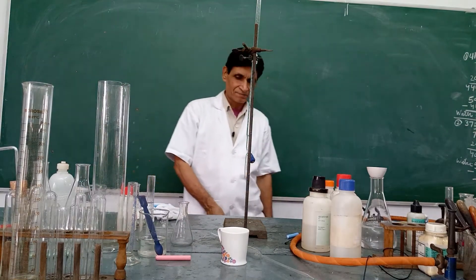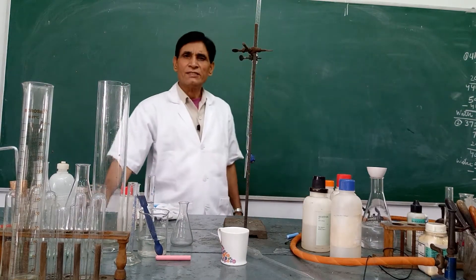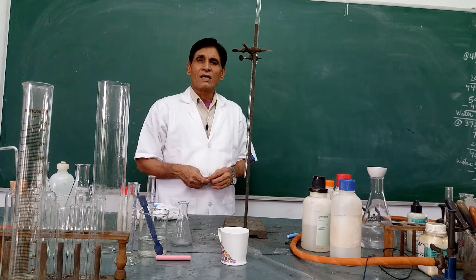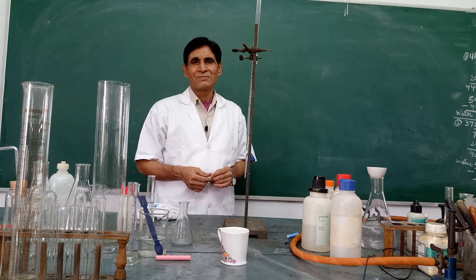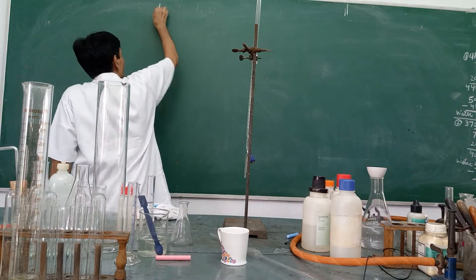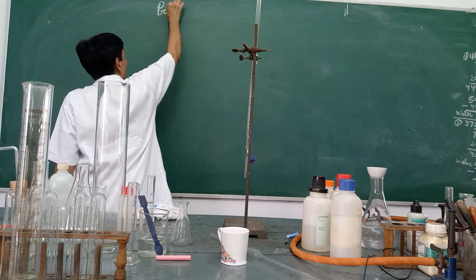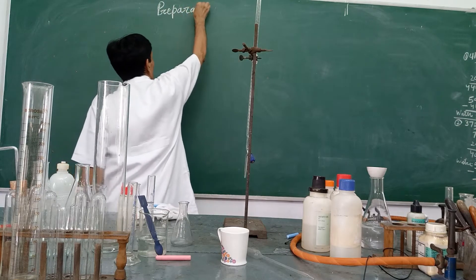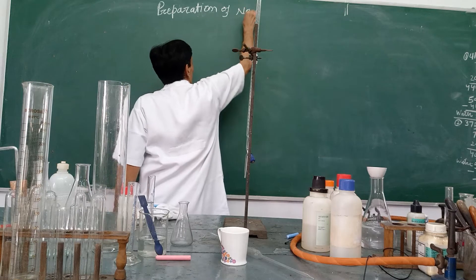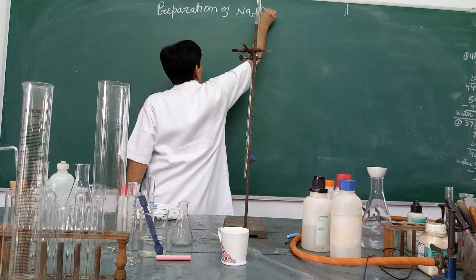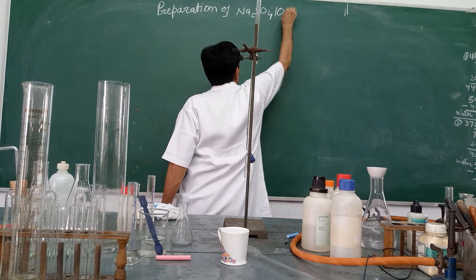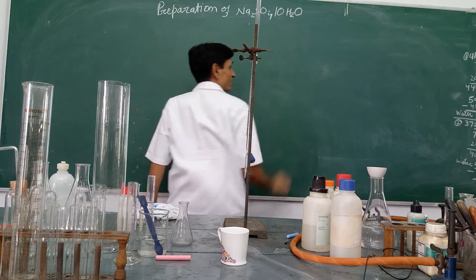Hello students. Today in this video I am going to tell you how sodium sulphate decahydrate crystal is prepared. Preparation of sodium sulphate Na2SO4·10H2O. This is also known as Glauber's salt.